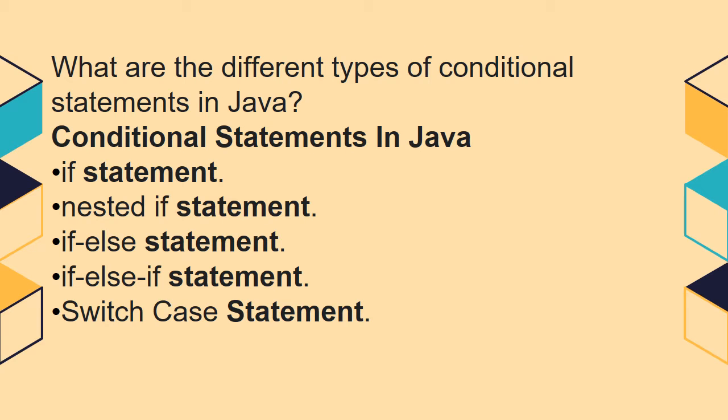What are the different types of conditional statements in Java? Here we are going to discuss the different types of conditional statements. There are namely five conditional statements in Java: if statement, nested if statement, if-else statement, if-else-if statement, and the last one is switch case statement.